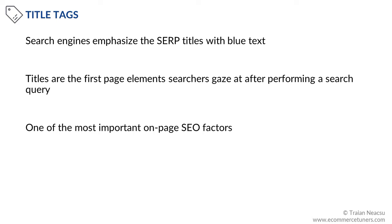Since Google emphasizes titles in blue text, they are the first element searchers can scan on SERPs. Titles play a big role in determining whether searchers will click on a particular listing. They are also one of the most important on-page SEO factors, and when others link to your pages organically, they tend to use the page titles as anchor text.